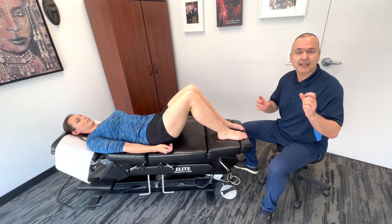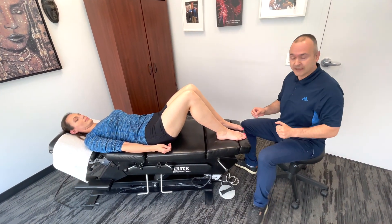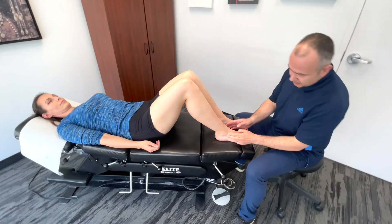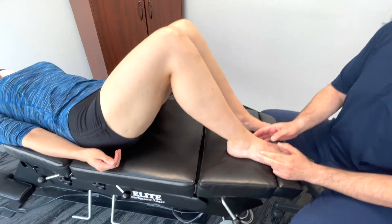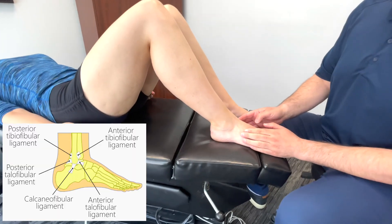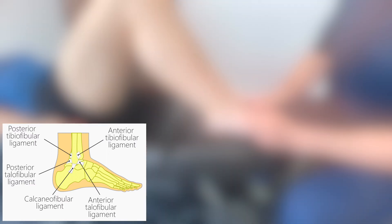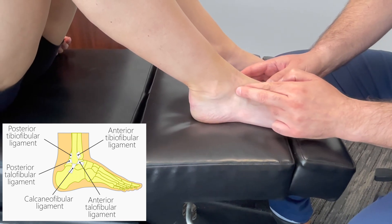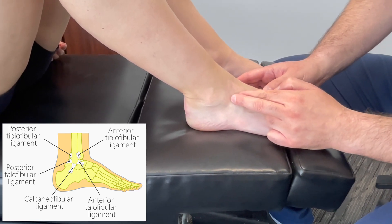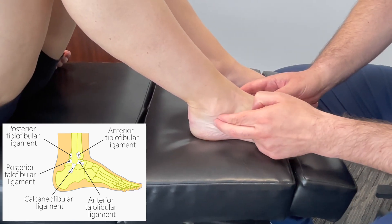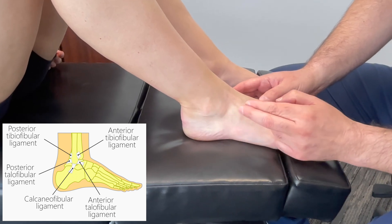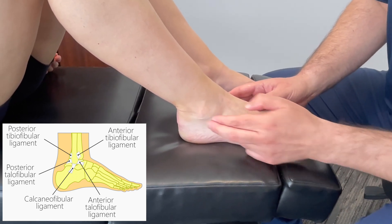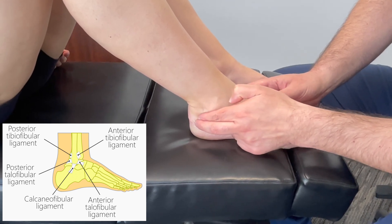The first part of the examination will be palpation, so let's palpate some key anatomical structures involved in injuries. Starting out, we're going to look at three main ligaments on the lateral aspect of the ankle: the anterior talofibular ligament, the ATFL, which runs in this direction; the calcaneal fibular ligament, which runs this way; and the posterior talofibular ligament, the PTFL, which runs posterior at a slight angle.